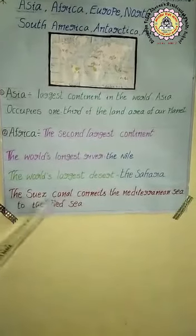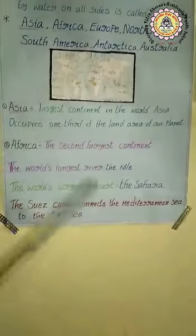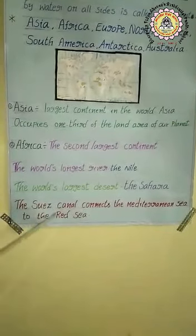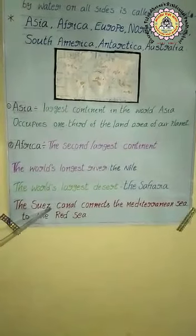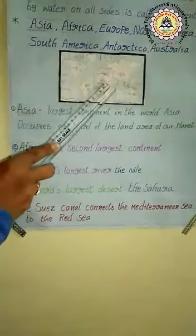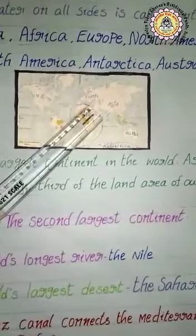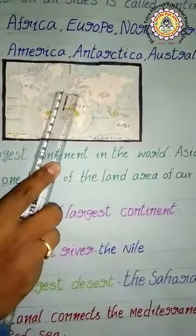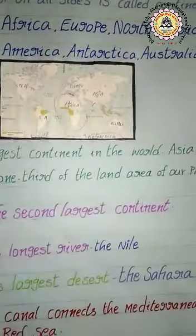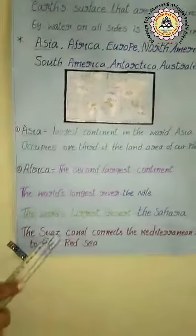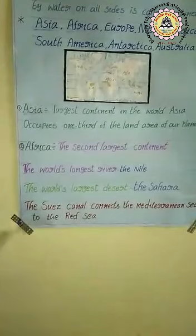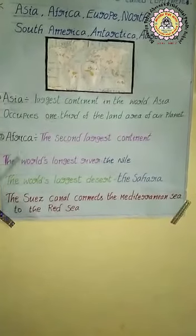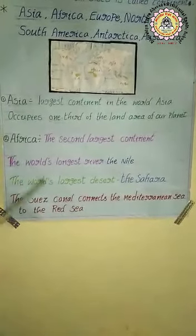One more important point: the Suez Canal. It is a man-made canal located in Egypt. The Suez Canal connects the Mediterranean Sea to the Red Sea — both seas are connected with the Suez Canal. It allows two-way water transportation between Europe and Asia without having to go around Africa. That is the importance of the Suez Canal.